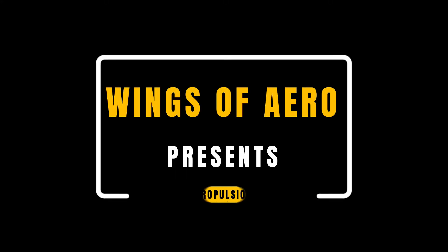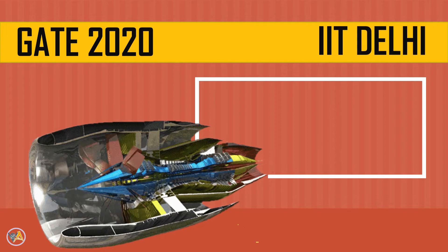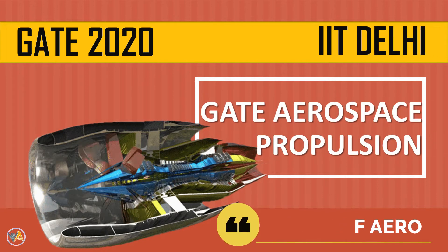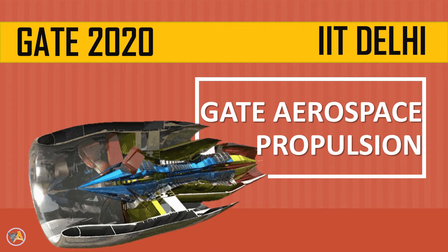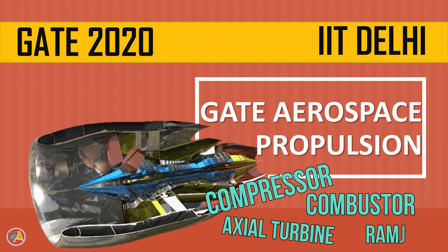Hi friends, welcome to Wings of Arrow. Today I will solve aircraft propulsion question answers which are asked in GATE Aerospace 2020. The questions are from centrifugal compressor, axial compressor, axial turbine, combustion chamber, and ramjet.